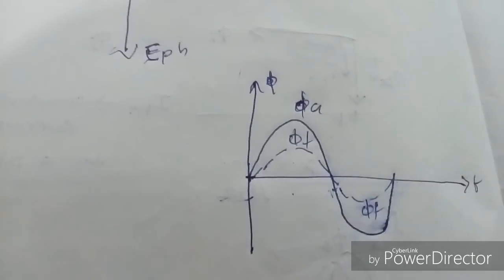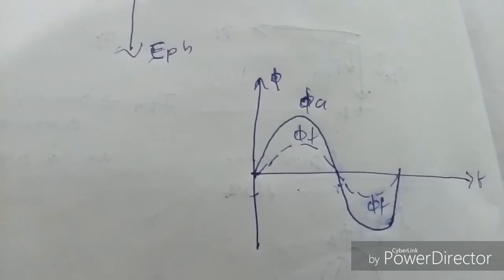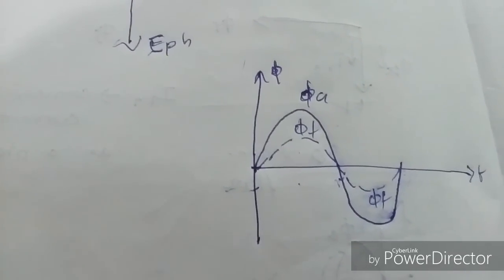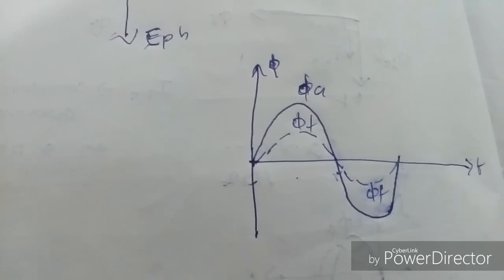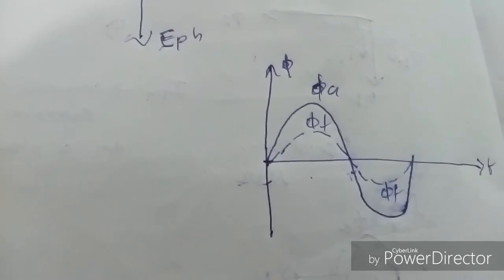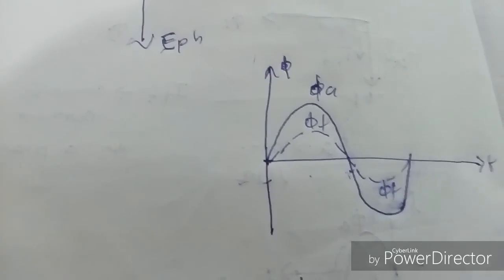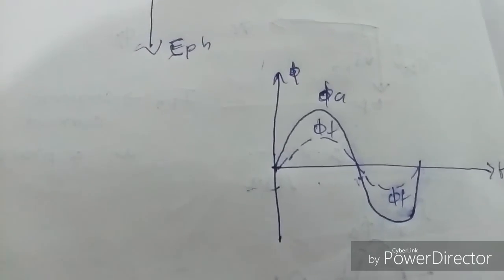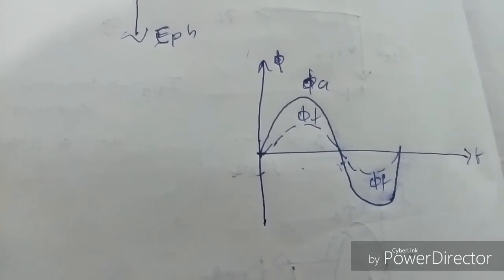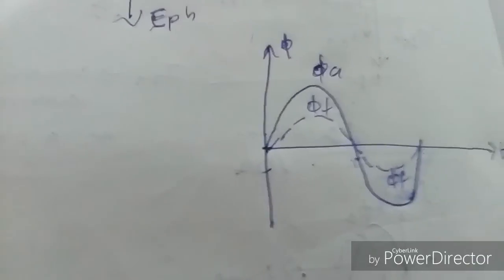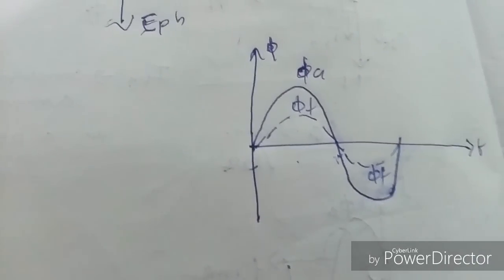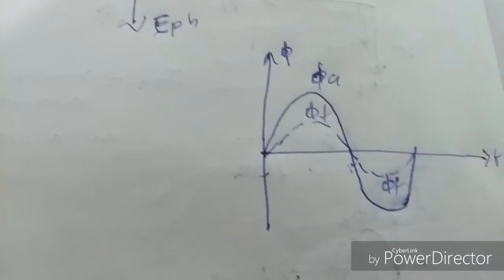So in a resistive load, the armature reaction results in cross magnetization. In an inductive load it results in a demagnetizing effect. And in a capacitive load it results in a magnetizing effect. Thank you.